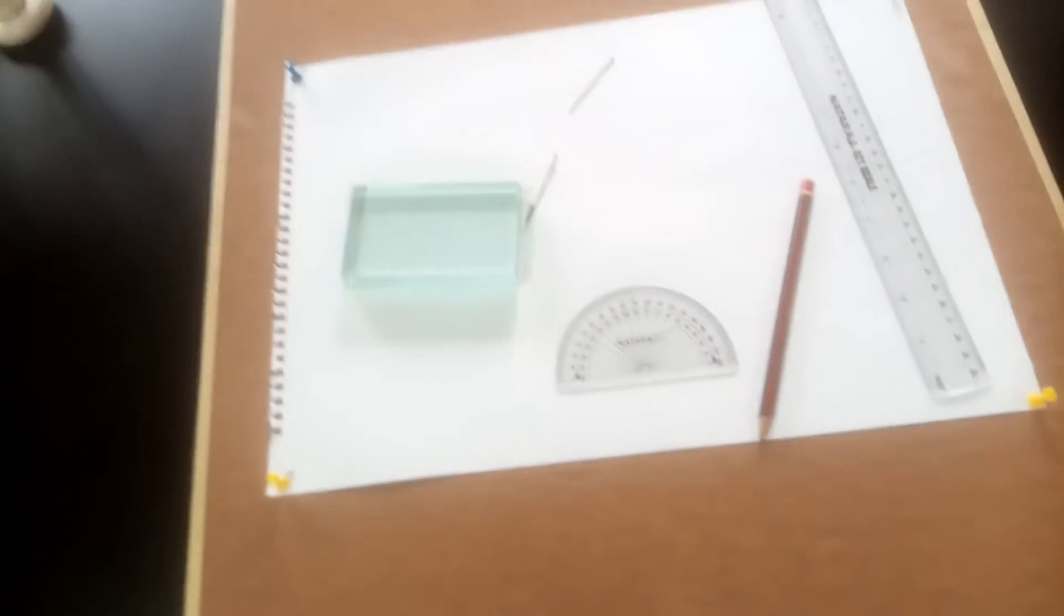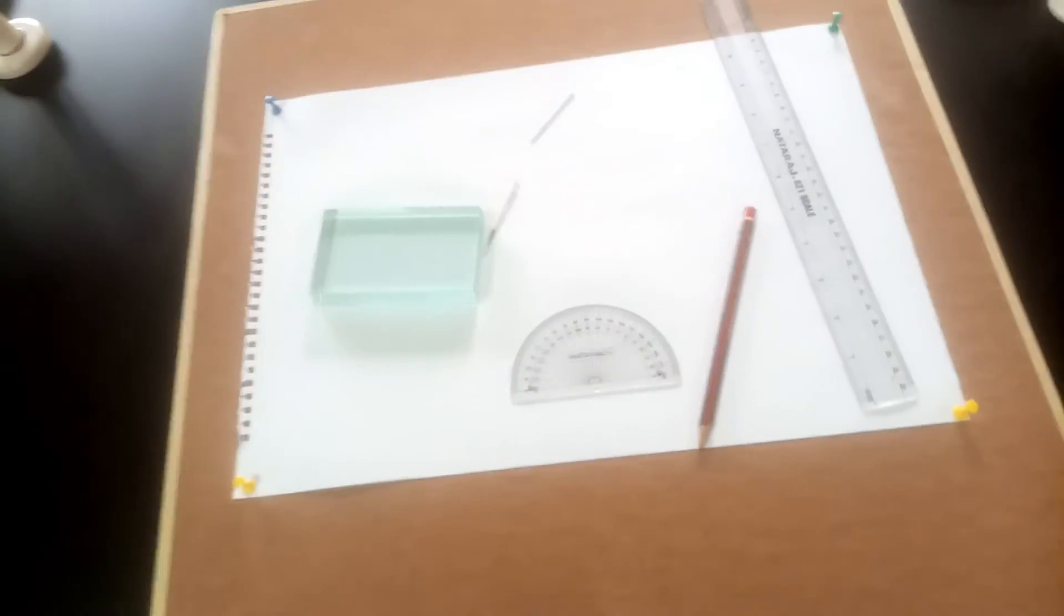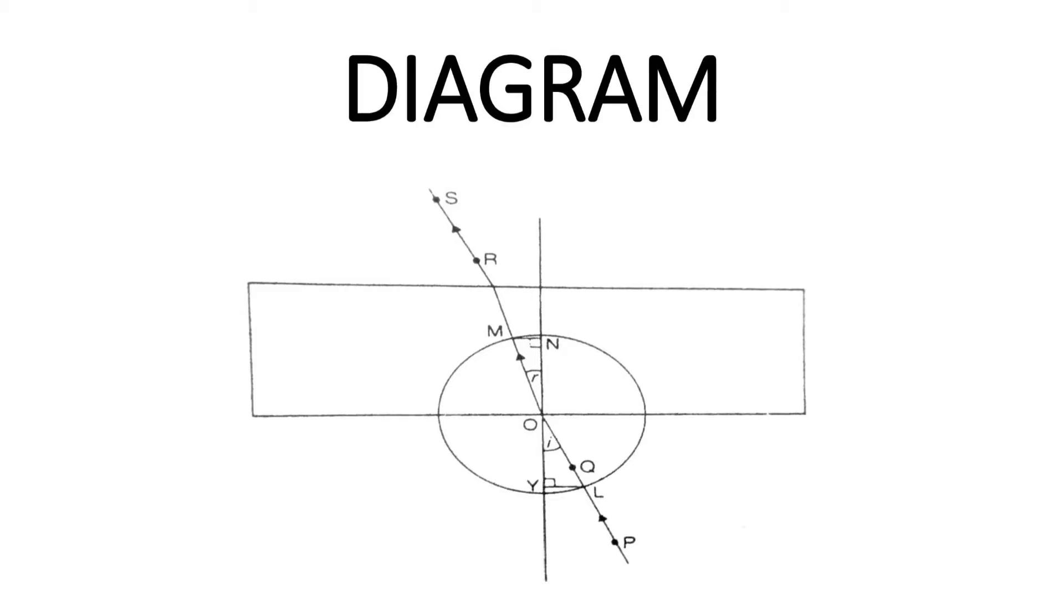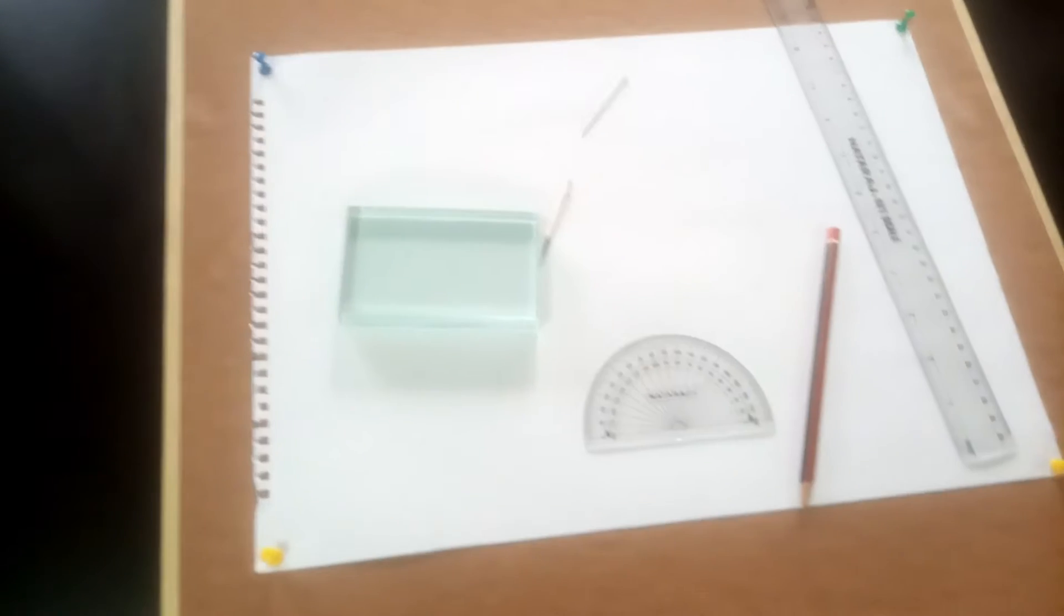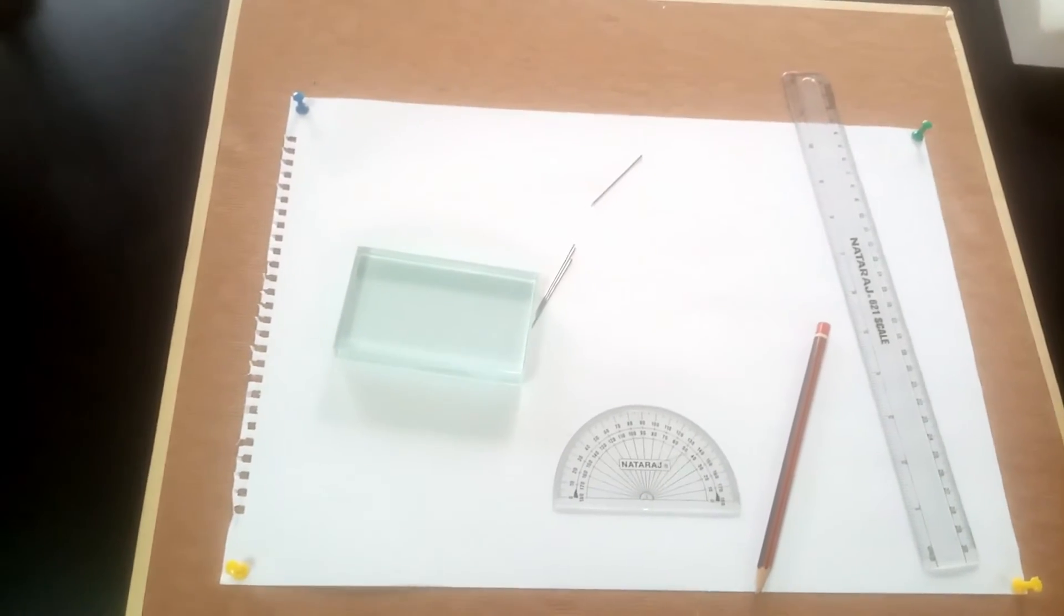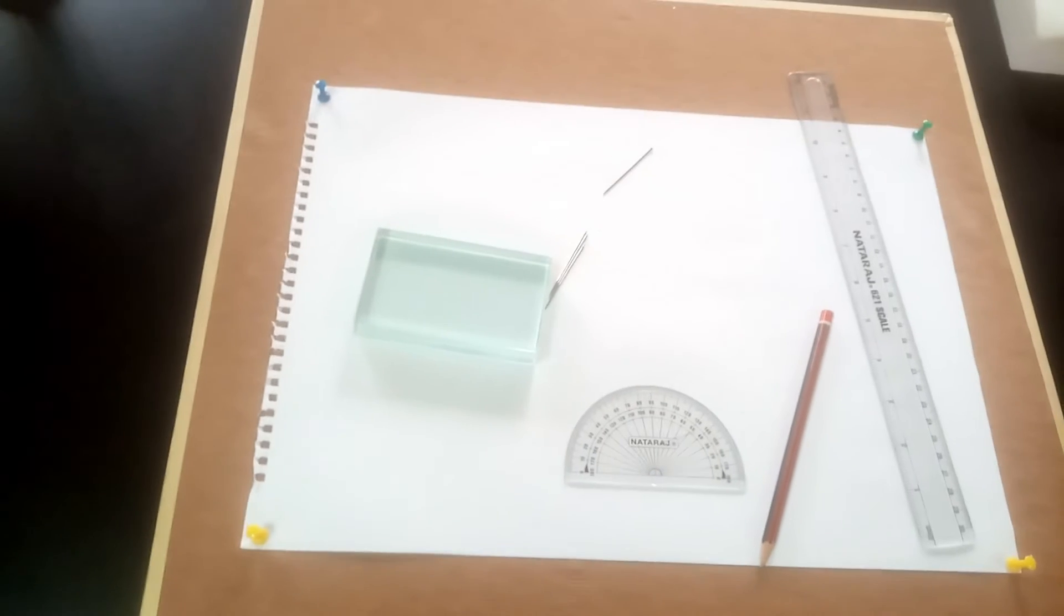If you look at the screen now you are going to see the diagram that will give us a guide on what we want to do. We are going to follow that and get the refractive index of this particular block we are using. The first thing we are going to do would be to place the rectangular glass block on the paper and draw its outline.